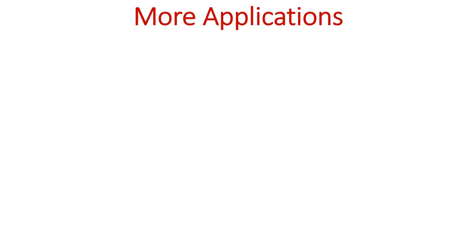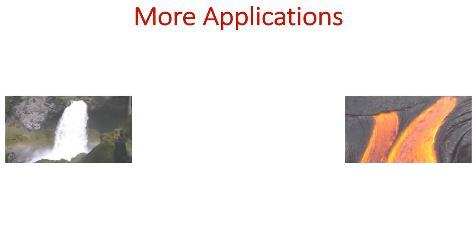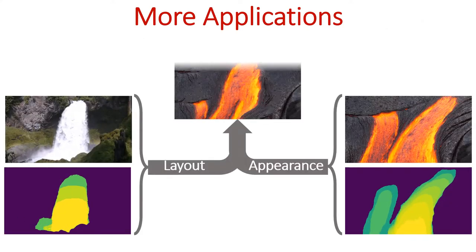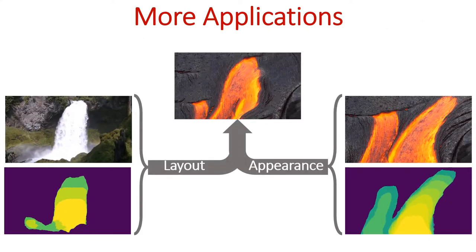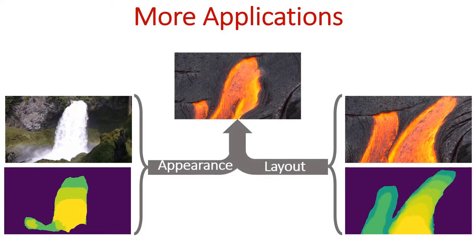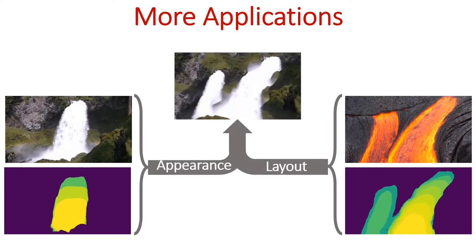We demonstrate the utility of our approach for several other video manipulations. For example, by incorporating optical flow, we guide VGPNN to transfer the motion and appearance between two input videos. We call these video analogies.